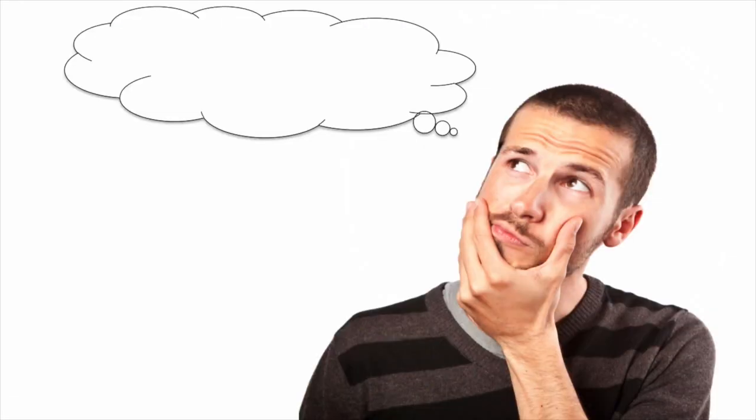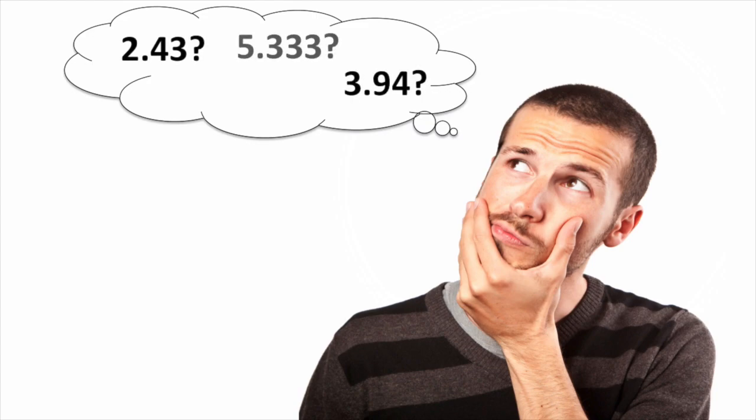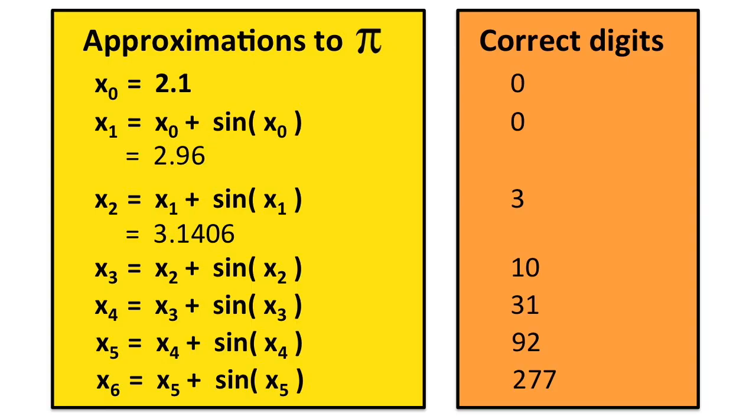There's nothing special about starting with the number 3. You can start with any number that's not too far away from pi and this process still works. For example, starting with 2.1 produces 277 digits of pi after 6 steps.